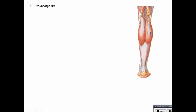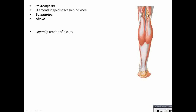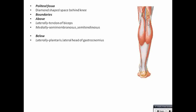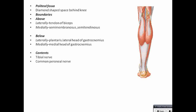There is a small depression at the back of the knee called the popliteal fossa. It is a diamond-shaped space, a depression seen behind the knee. The boundaries: above laterally by the tendon of biceps; medially by semimembranosus and semitendinosus. Below: laterally plantaris and lateral head of gastrocnemius; medially the medial head of gastrocnemius. Contents are tibial nerve, common peroneal nerve — both divisions of sciatic nerve — popliteal artery (a continuation of femoral artery), popliteal vein (continues as femoral vein), popliteal lymph nodes, posterior femoral cutaneous nerve, fat, small saphenous nerve, and genicular branches of obturator nerve.